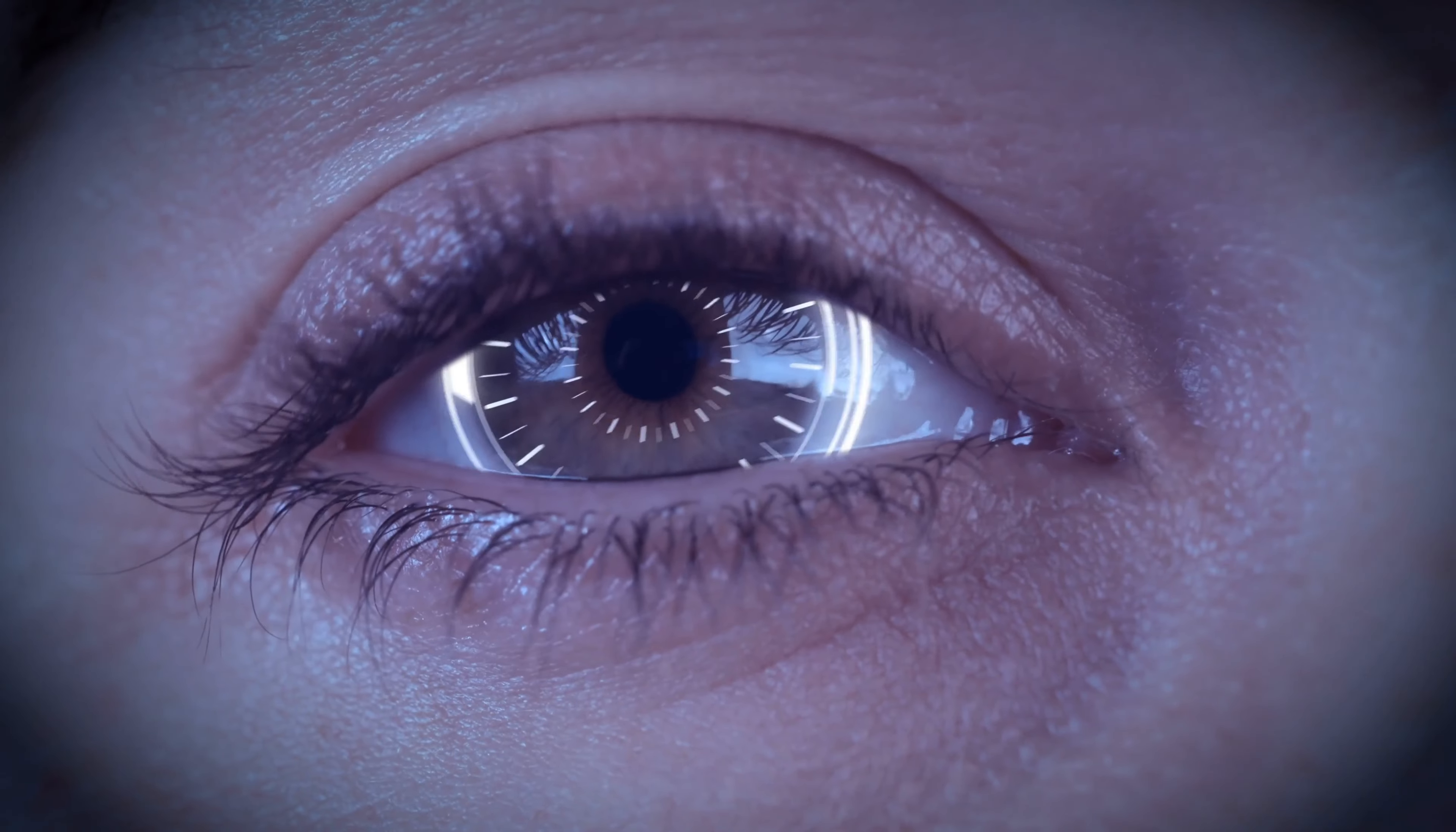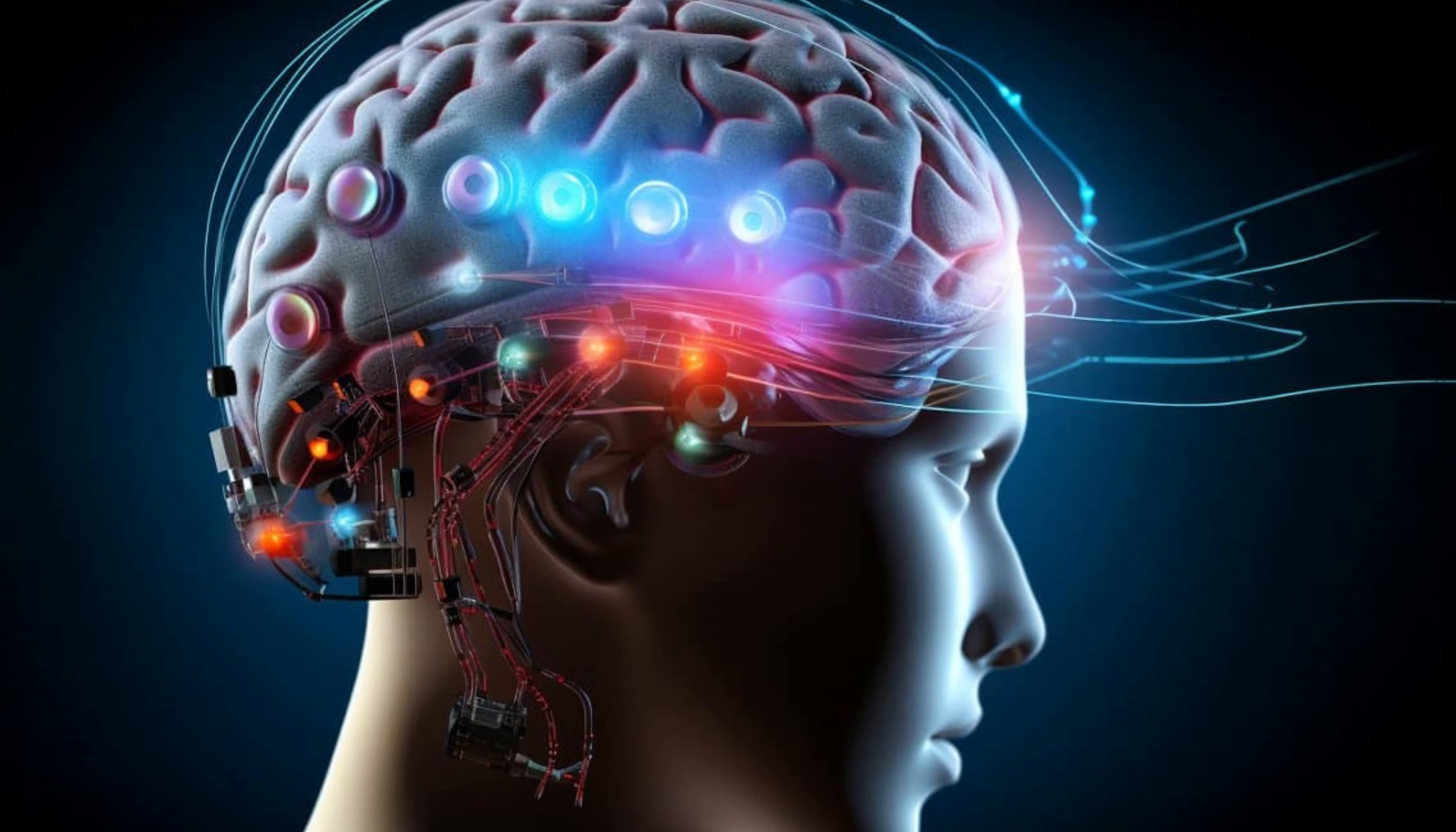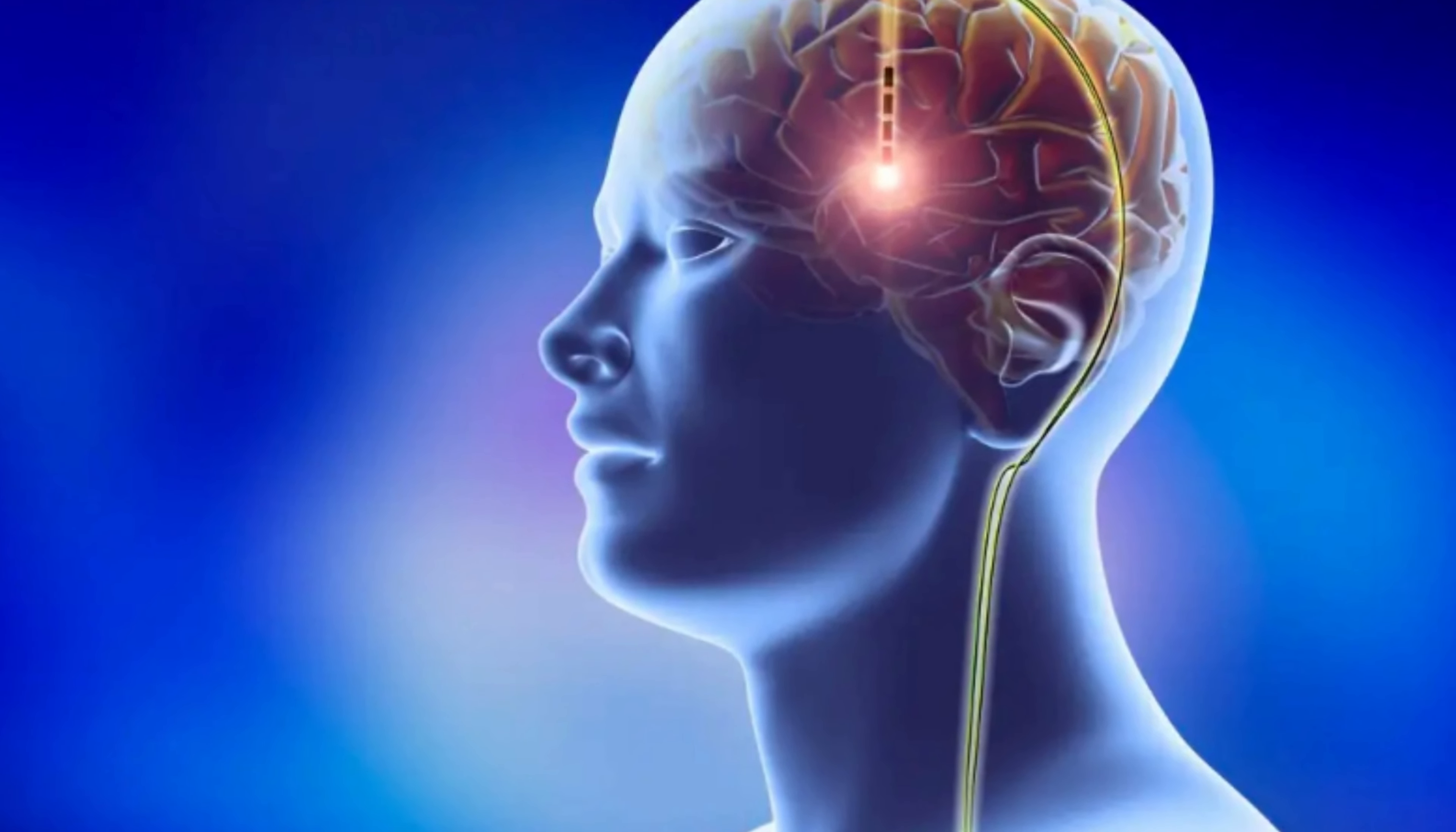Neuralink's approach involves implanting a brain implant through neurosurgery. This process includes creating a hole in the skull or craniotomy, removing the protective brain tissue layer or dura, and inserting thin, flexible electrode threads into specific areas of the brain. These electrodes connect to a computer chip called the N1 chip, which is placed in the skull. This setup allows for bidirectional communication between the brain and the chip.